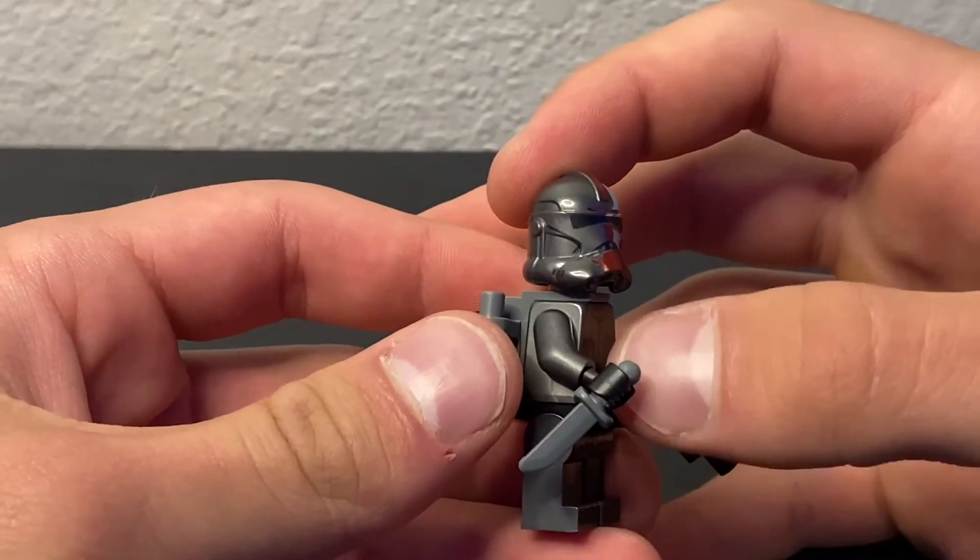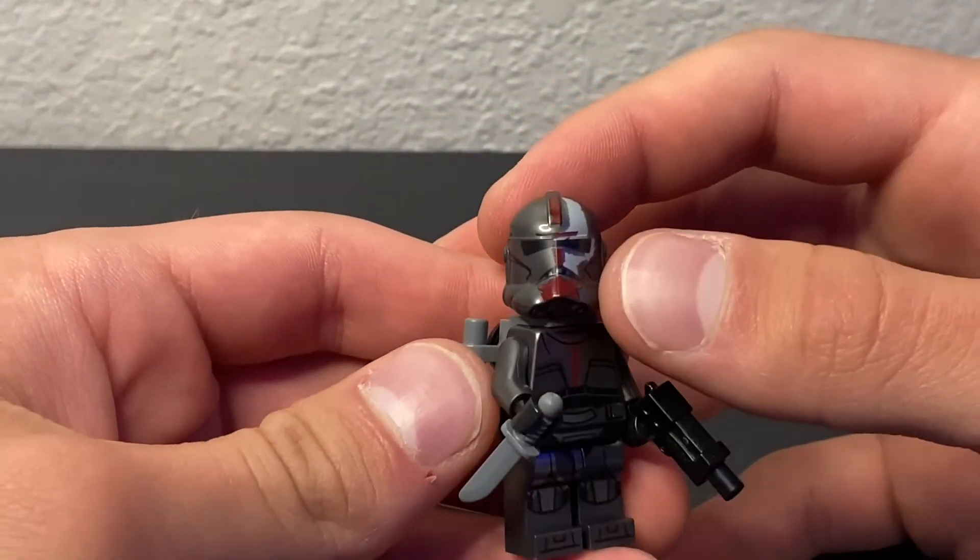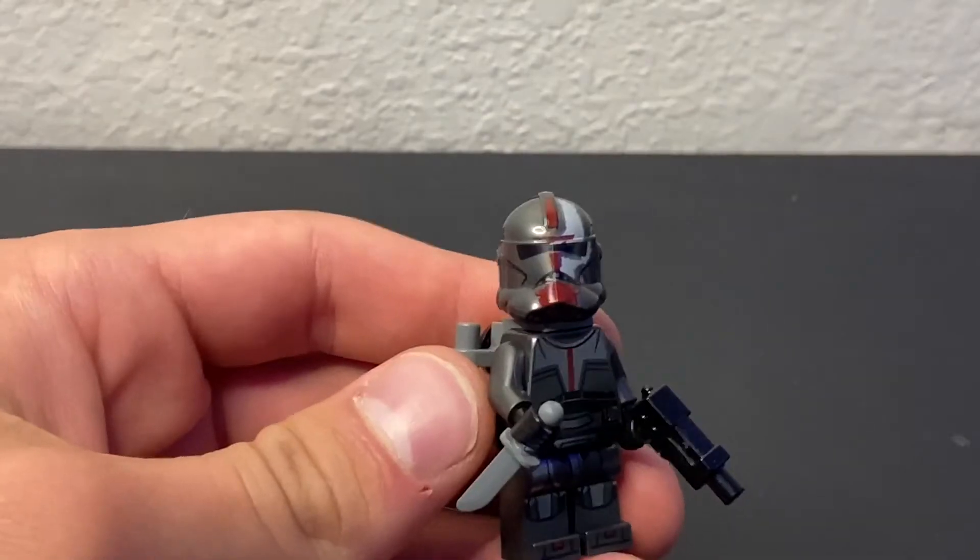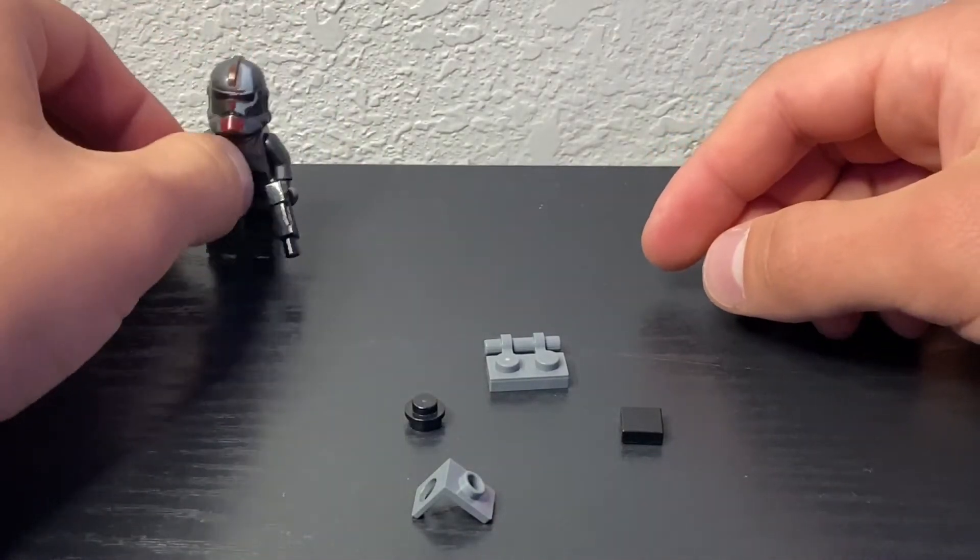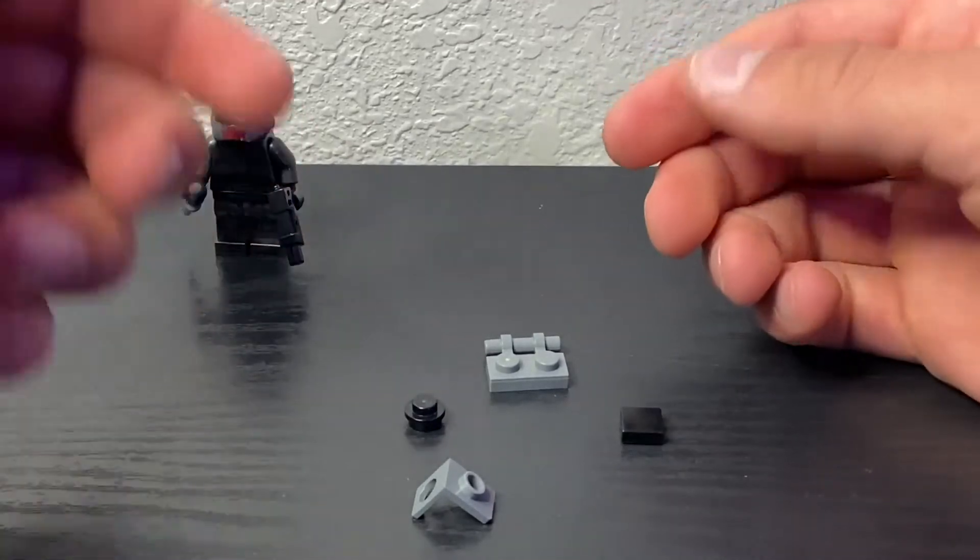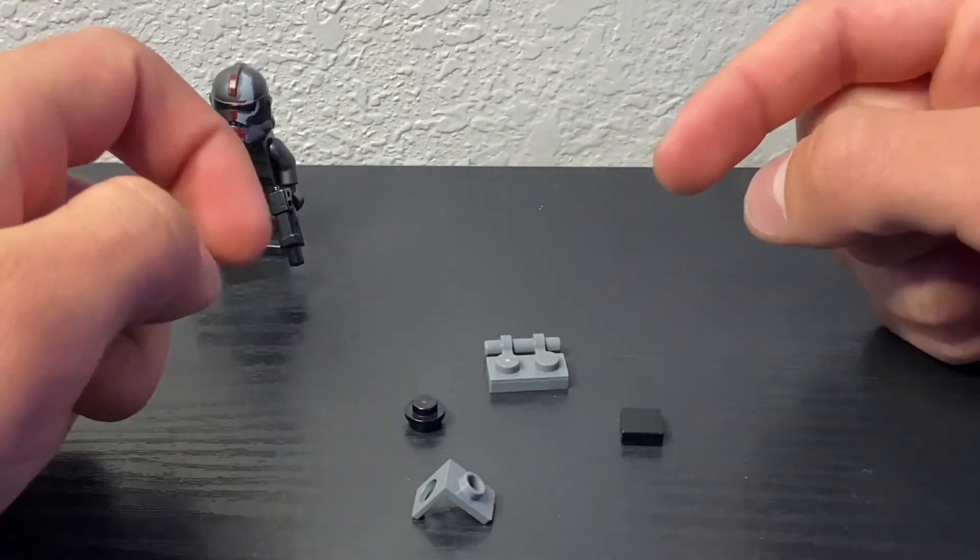Now another thing that I cannot forget are modifications for the minifigures. So let's start off with Hunter. Hunter, of course, is missing a backpack. So what we're going to do is just build one for him. And these are the four pieces that you'll need.